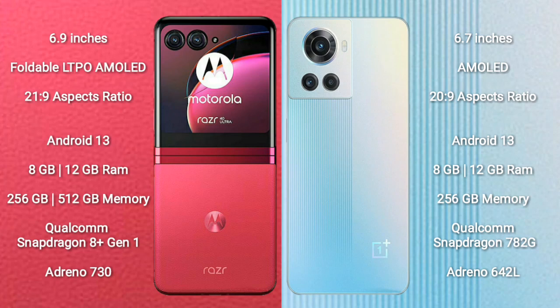Motorola Razr 40 Ultra runs on Android 13. OnePlus K11 also runs on Android 13. Motorola Razr 40 Ultra comes with 8GB or 12GB RAM and 256GB or 512GB internal storage, powered by a Qualcomm Snapdragon 8 Gen 1 processor with an Adreno 730 GPU.